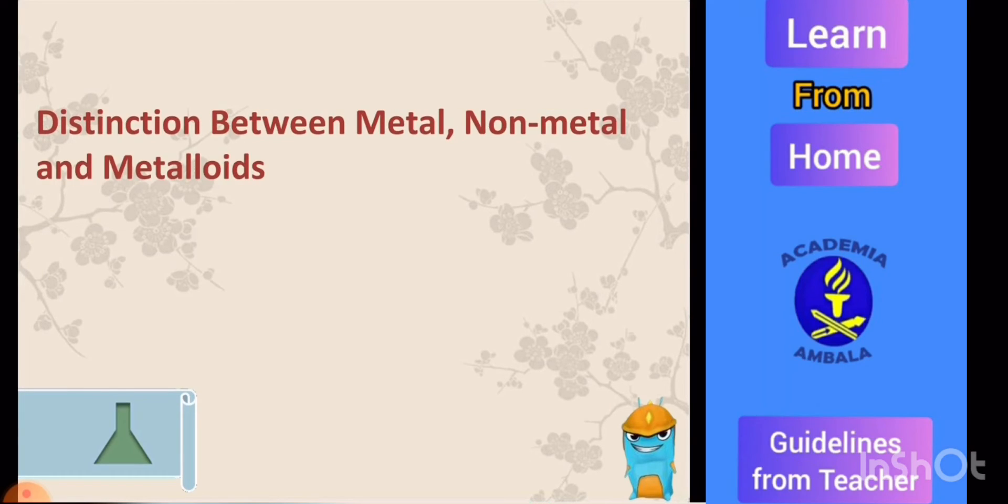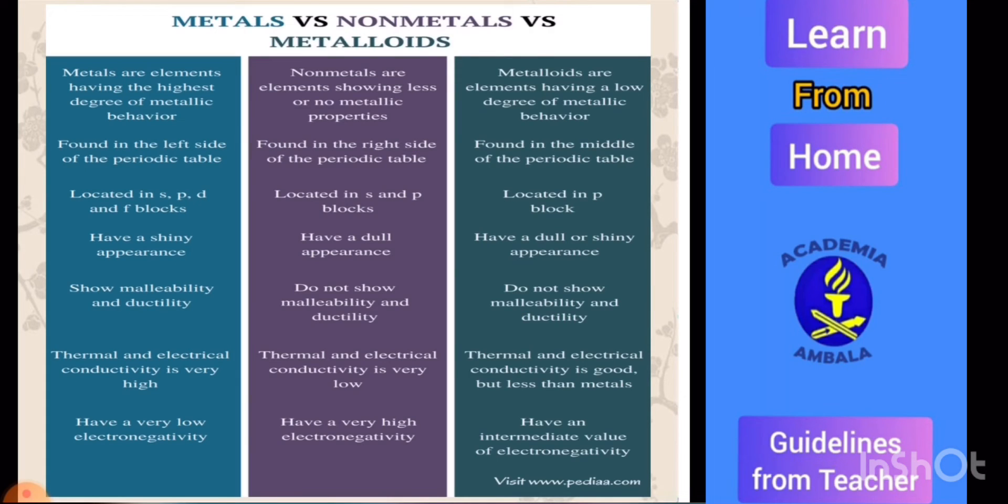Next is distinction between metals, non-metals, and metalloids. Metals are those elements having high degree of metallic behavior, whereas non-metals show less or non-metallic behavior. Metalloids are elements having properties in between metals and non-metals. These have a low degree of metallic behavior. Metals are found in the left side of the periodic table, non-metals are found on the right side of the periodic table, and metalloids are found in the middle of the periodic table.